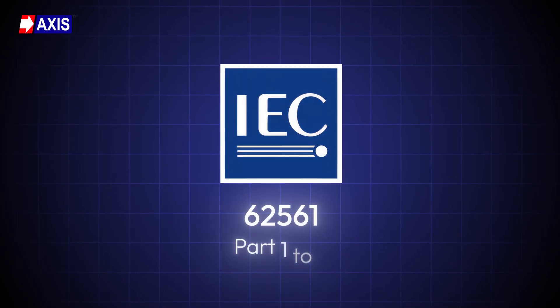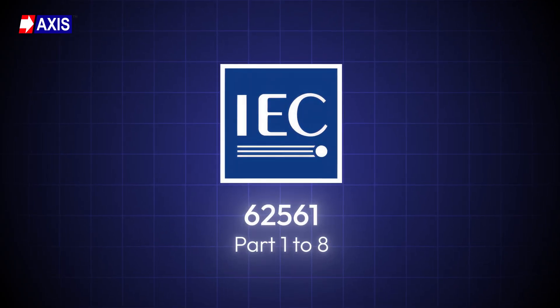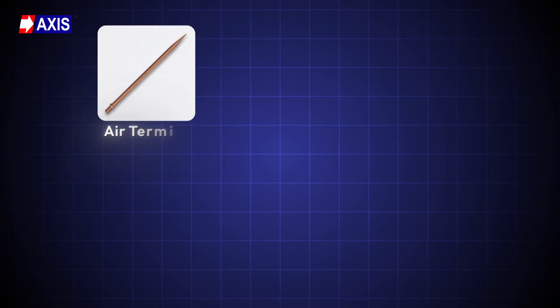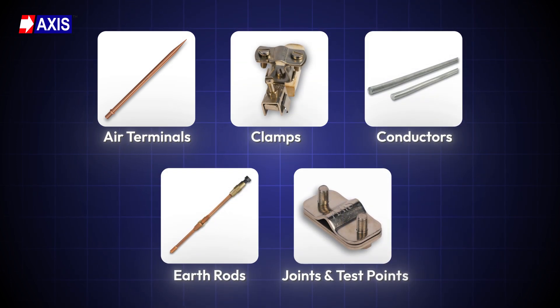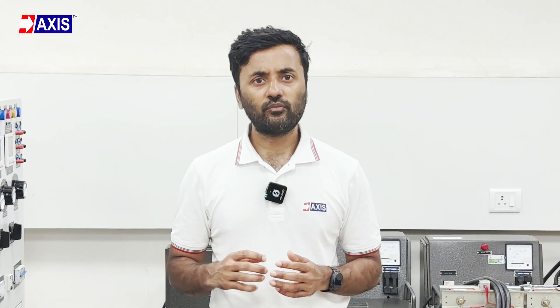Number 10, IEC 62561, Part 1 to Part 8. This standard defines the performance and testing requirements for all components used in an external lightning protection system. It covers air terminals, clamps, conductors, earth rods, joints, and test points. Use IEC 62561 when you are selecting or approving materials for a lightning protection system. It ensures that every component is tested for strength, corrosion resistance, and conductivity.